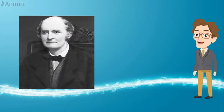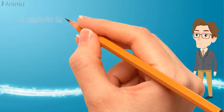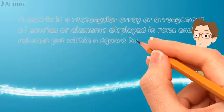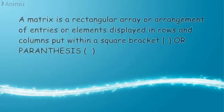Let us define a matrix. A matrix is a rectangular array or arrangement of entries or elements displayed in rows and columns put within a square bracket or parenthesis.